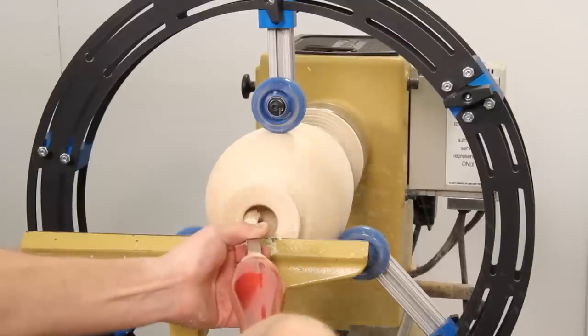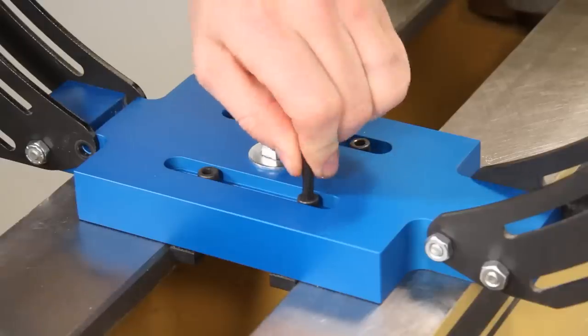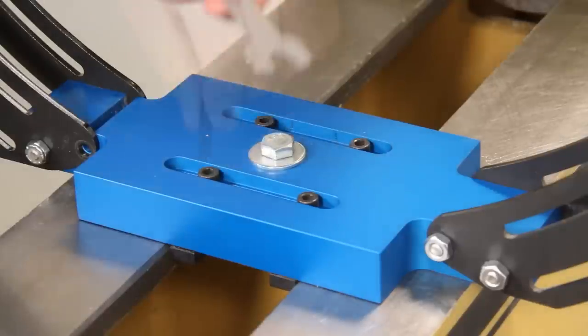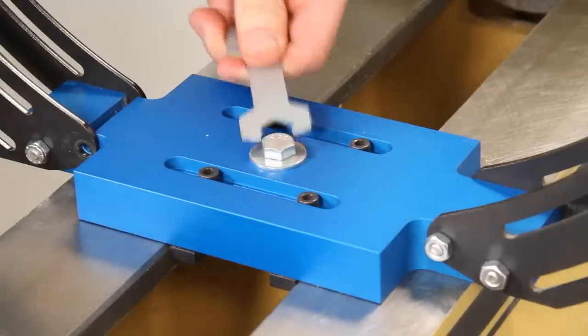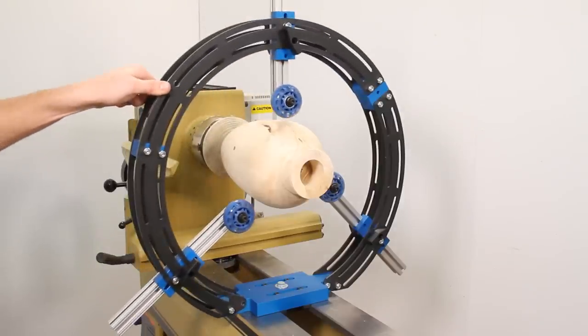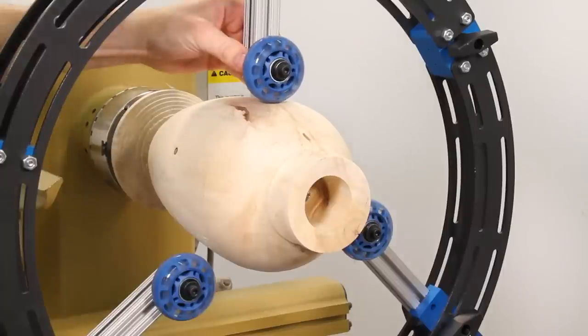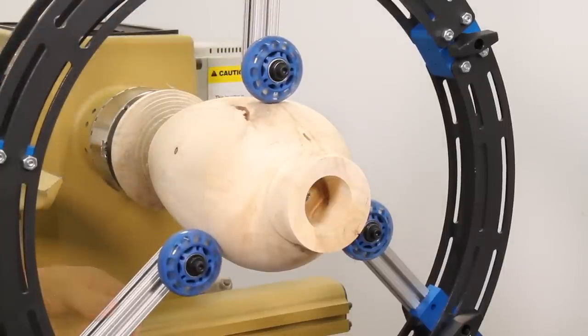For full circular support, simply lock the mounting base into place using the provided spacer blocks and close the ring around the work piece. Adjust the support arms as needed and you're ready to turn.